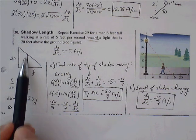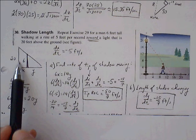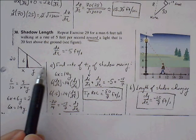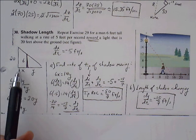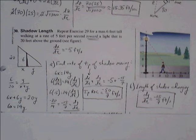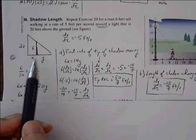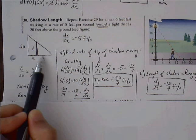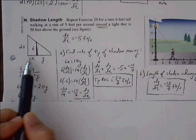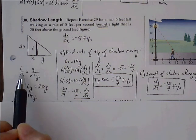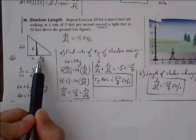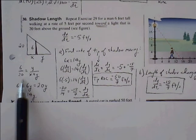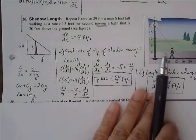In this diagram, 6 represents the height of the person and 20 represents the height of the lamppost. x is the horizontal distance between the person and the lamppost, and y is the distance between the tip of the shadow and the person. We create a similar triangle proportion: small height is to big height as small base is to big base, giving us 6/20 = y/(x + y).